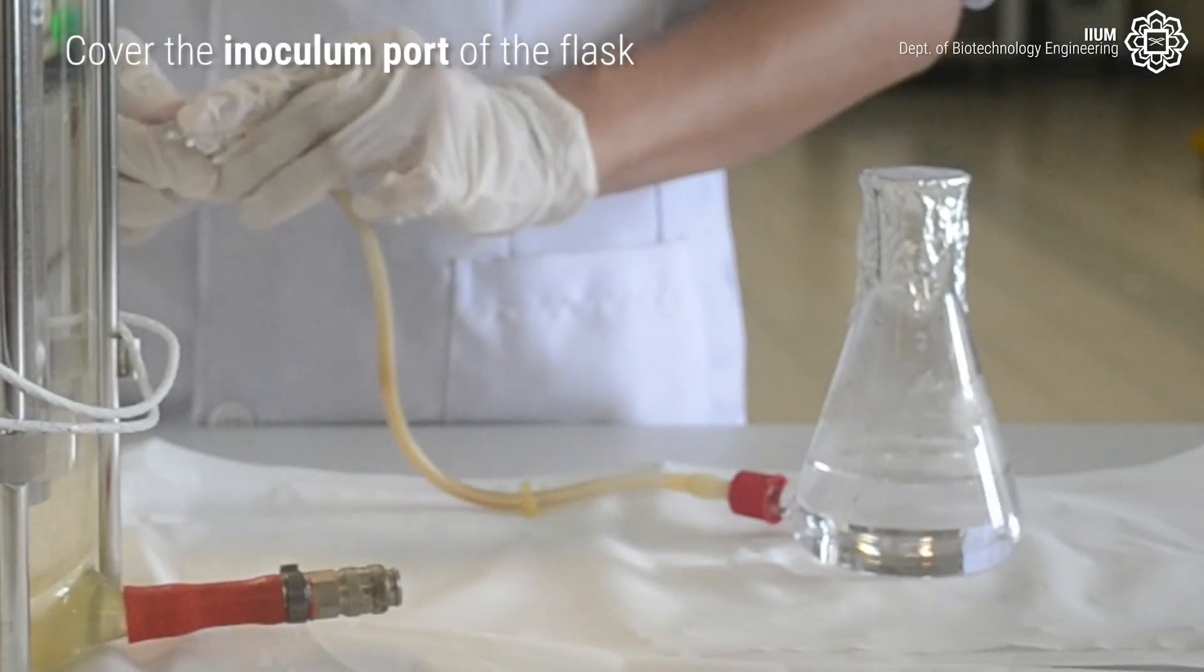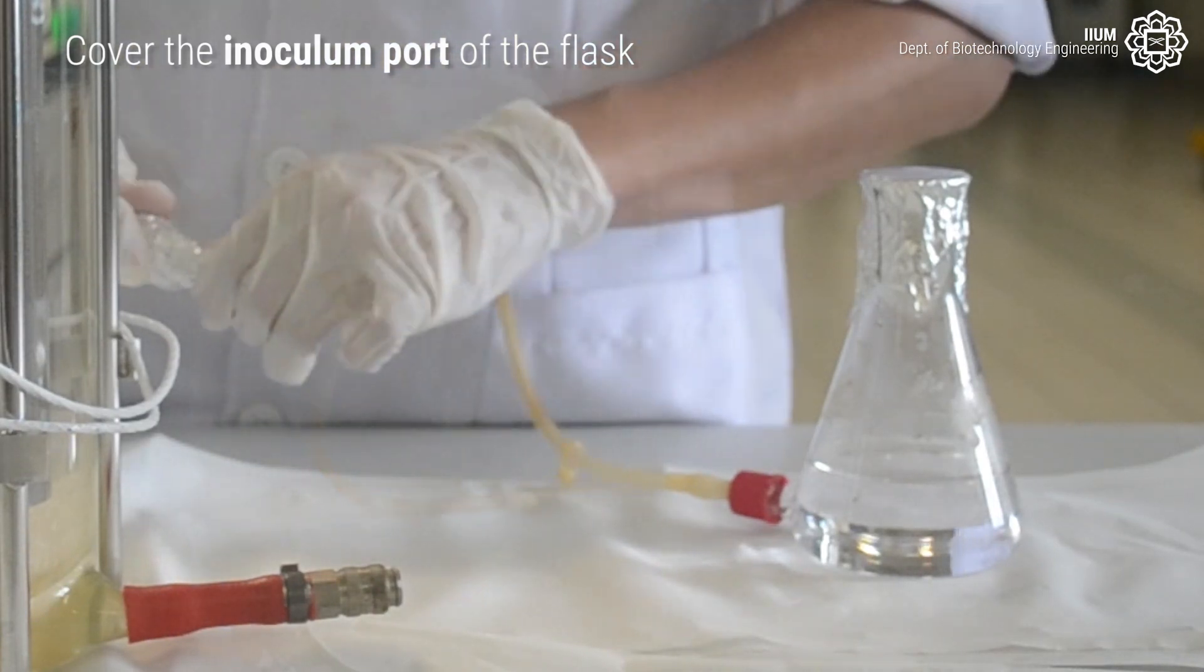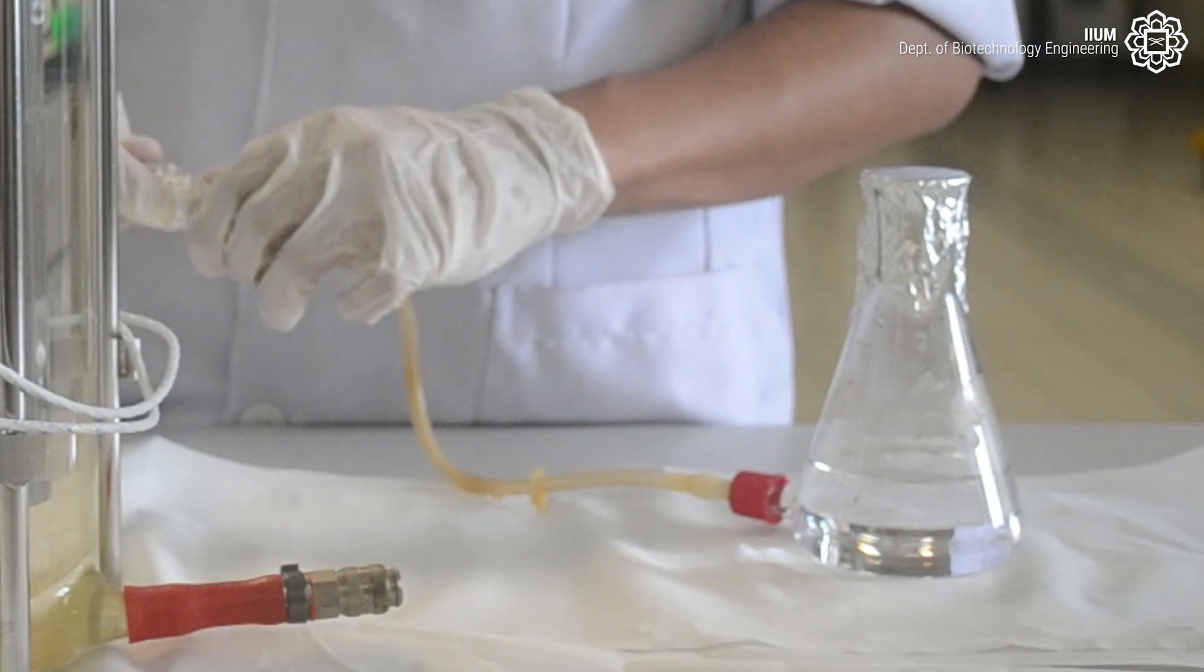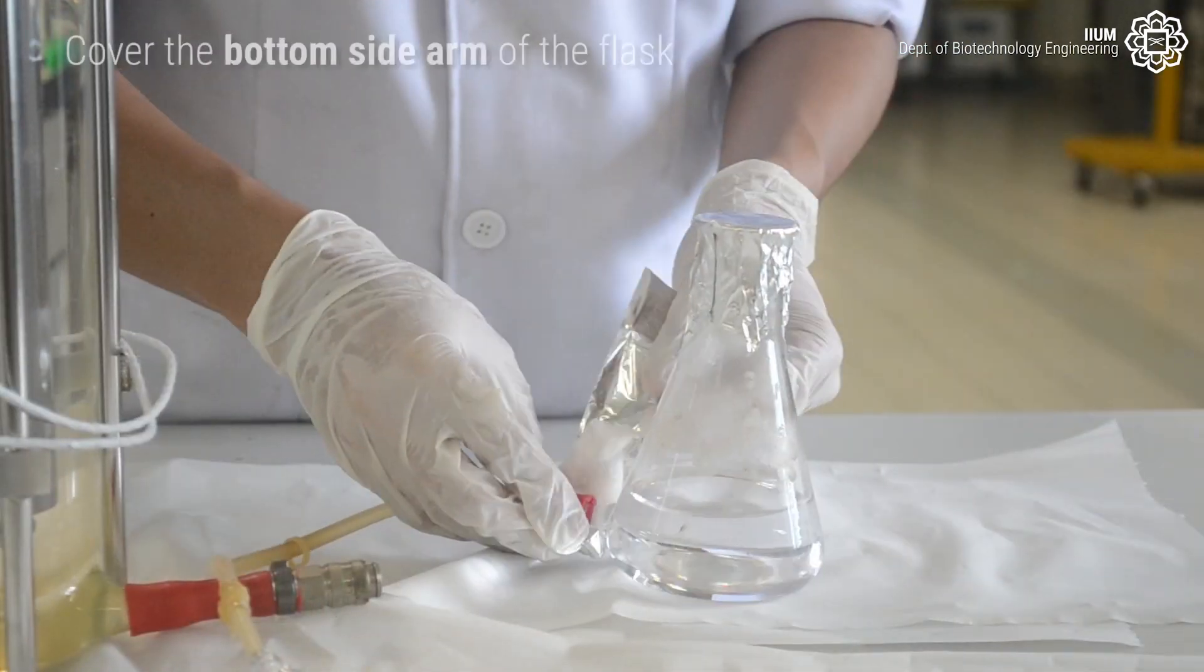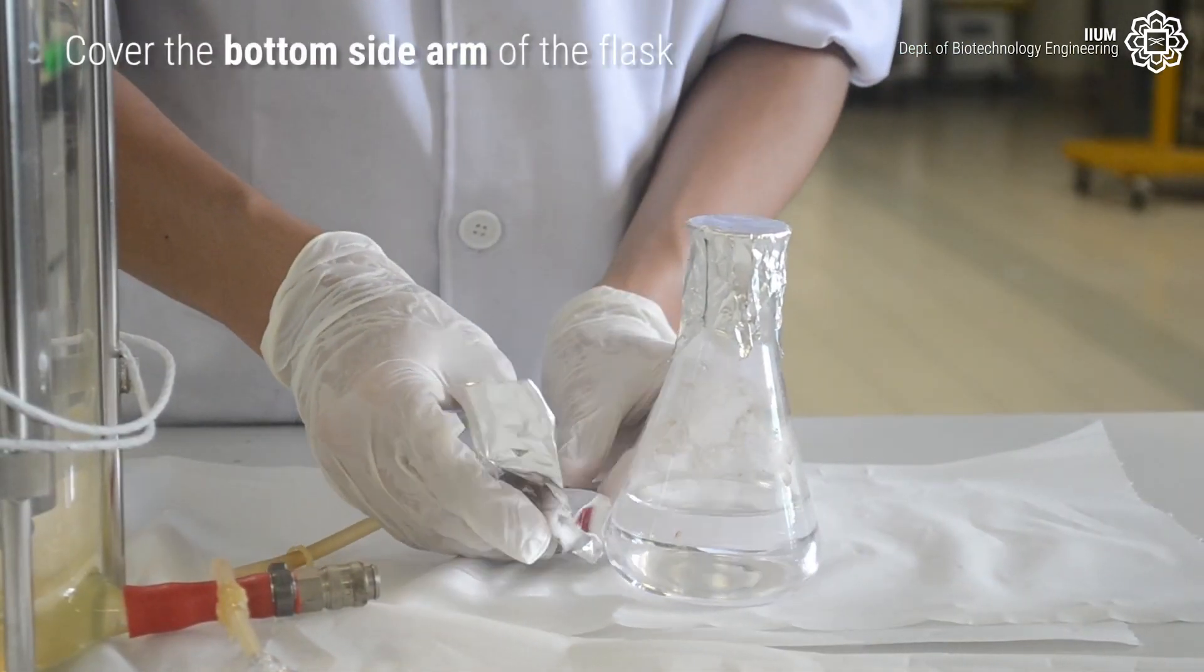First, cover the inoculum port of the flask. After that, cover the bottom sidearm.